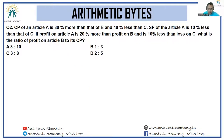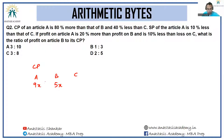Next problem: the CP of article A is 80 percent more than that of B, and 40 percent less than C. So if CP of B is 5x, then A will be 9x. And since A is 40 percent less than C, C will be 15x.